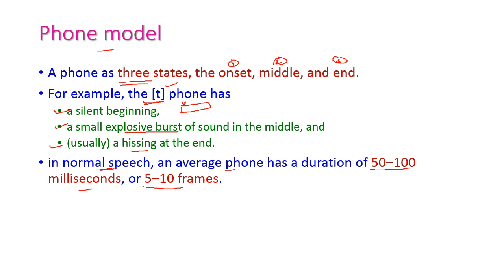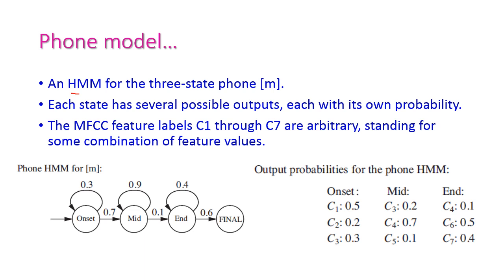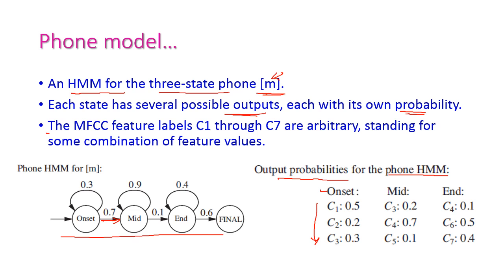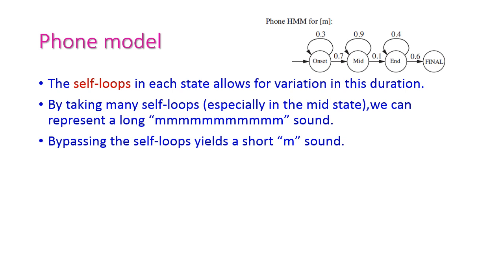This diagram shows a hidden Markov model for a three-state phone 'm' for the letter M. Each state has several possible outputs — it may output to the next state or loop back to itself with its own probability. The self-loop in each state allows variation in duration: how long a particular letter is pronounced. For example, if the self-loop in the middle state is used, it gives a long 'm' sound; if bypassed, it gives a short 'm' sound.